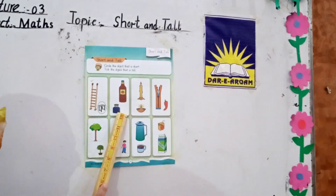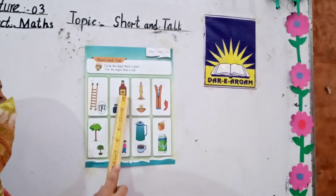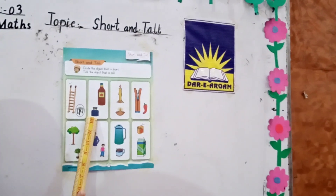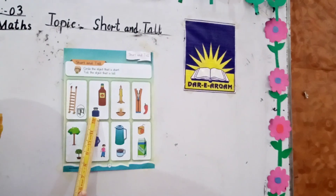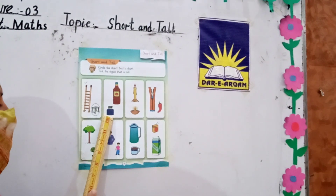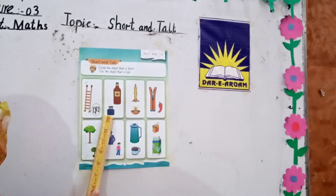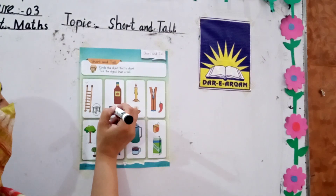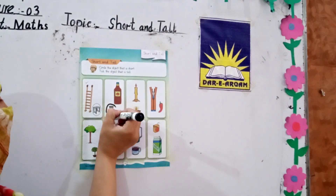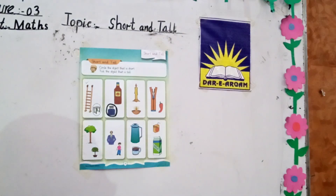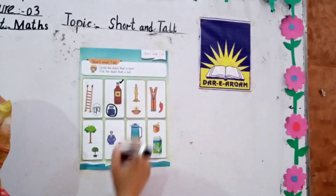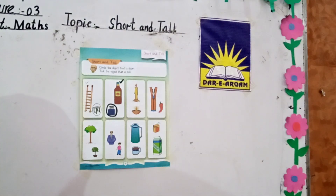In the next box, students, we have two objects. One is short and the second is tall. This object is tall, students. Tell me. Very good. This is short. So all the students circle the short object like this. Hurry up, students. Done. And we tick the tall object. Done.